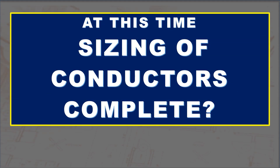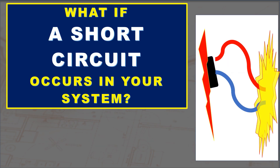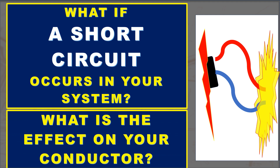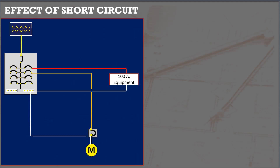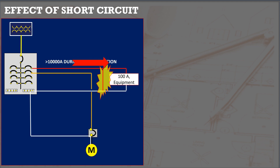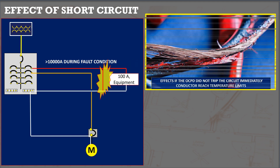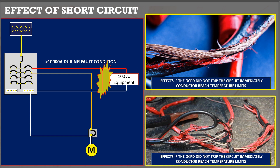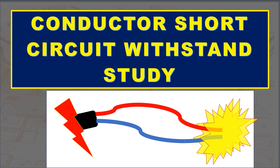At this time, is sizing of conductors complete? Almost. What if a short circuit occurs in your system? Since short circuit calculations are not part of the topic, I will show the effects if the overcurrent protective device does not trip immediately. During a short circuit, large amounts of current flow through the conductor. The heat generated depends on conductor size and material, as well as fault current and duration. The conductor has temperature limits depending on insulation material type. To avoid damage, conductor short circuit withstand study shall be included in sizing and selection.